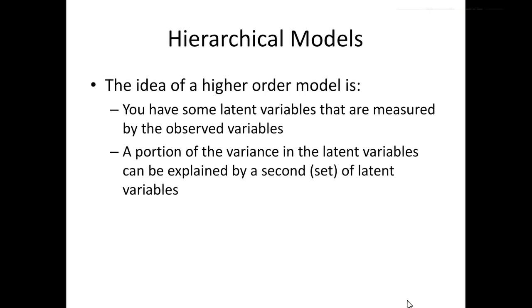So with a higher order model you have some latent variables that are measured by your manifest or observed variables, and that's your first order CFA. First order meaning the first layer of latents. But then what you do is take the relationship between the latents, so those curved or double headed arrows, and you explain that relationship by adding a second set of latent variables that predicts those first order latents. So you tend to get what's called a second order model where you're explaining the relationship between first order latents by having those second order latents there.